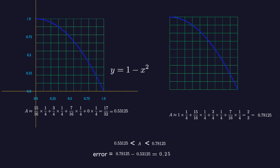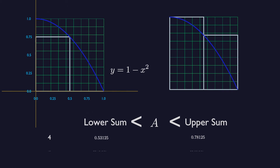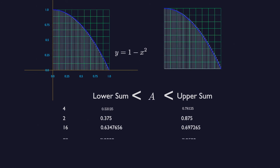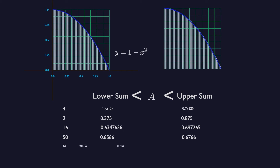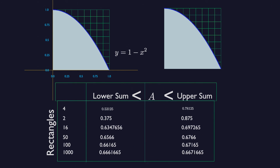Now let us generate finite approximations for the area of R using many rectangles — for four rectangles, for two rectangles, for sixteen rectangles, for fifty rectangles, for one hundred rectangles, for one thousand rectangles. The real area converges to 2/3 when the number of rectangles goes to infinity.